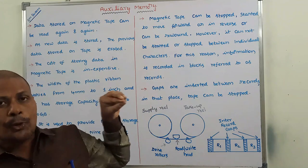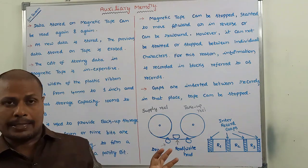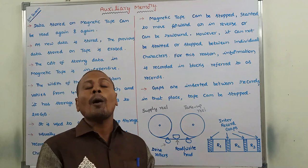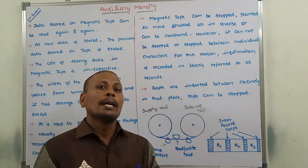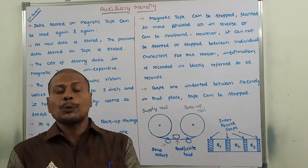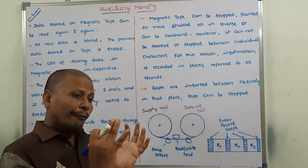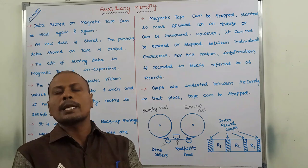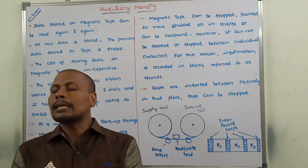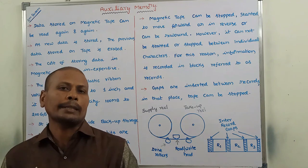It is not possible to stop or start the magnetic tape between the individual characters. Hence, the information is stored on the magnetic tape in terms of blocks — a block is a collection of records. To stop the magnetic tape, some gaps are inserted between the records. In those gaps, we stop the magnetic tape.